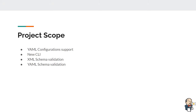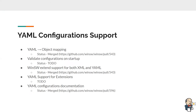For the project scope: I'll add YAML configuration support for the Windows service wrapper. As mentioned, we can't specify the configuration file from the command line interface explicitly, so a new CLI was identified as a needed feature. XML schema validation and YAML schema validation features will also be added. Under YAML configuration support, YAML object mapping is already merged with master — we're using YAML.NET library to map the YAML file into object graph. We also need to validate configurations on startup to avoid runtime breaks from invalid configurations.